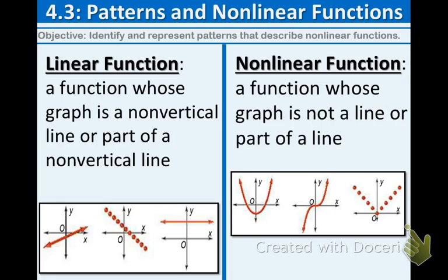A linear function is a function whose graph is a non-vertical line or a part of a non-vertical line. Non-vertical means not vertical, and vertical is up and down. You can see three different examples below: a diagonal line, a diagonal dashed or dotted line, and a horizontal line. Those are all linear.